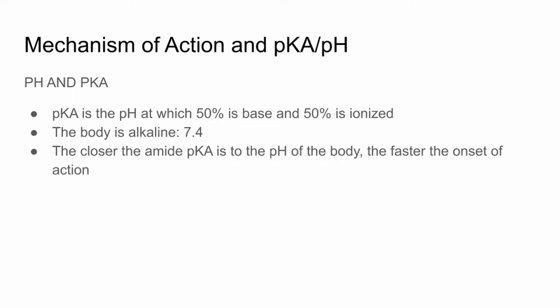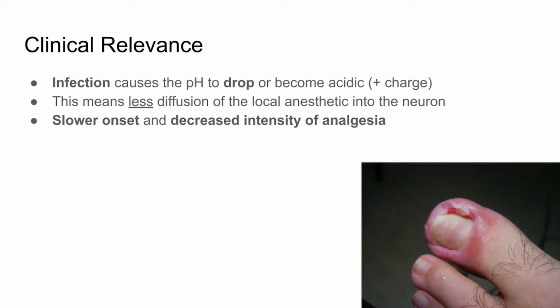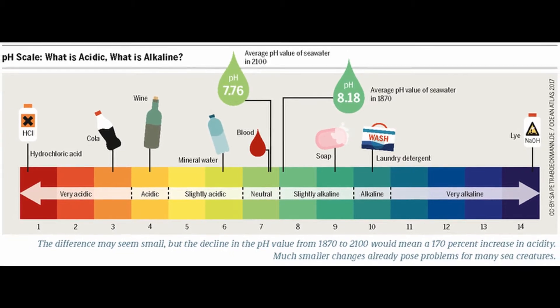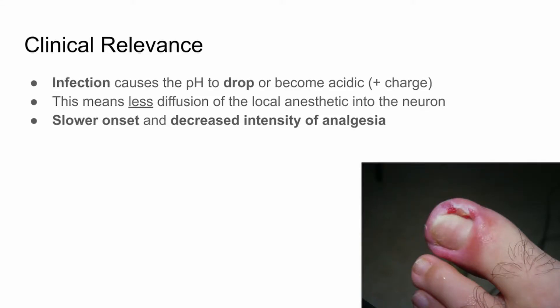Remember that pKa is the pH at which 50% is base and 50% is ionized. The body is alkaline at 7.4, and the closer the amide's pKa is to the pH of the body, the faster the onset of action. This has clinical relevance when we understand that infection causes the pH to drop or become more acidic, meaning there's going to be less diffusion of the local anesthetic into the neuron and a slower onset and decrease in effectiveness.